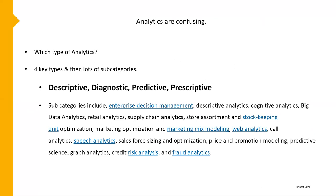Analytics can be confusing, but there are four key categories: descriptive, diagnostic, predictive, and prescriptive. Descriptive is what happened. Diagnostic is why did this happen. Predictive is where things are heading. And prescriptive is very much about what the next steps should be. There are some great reads out there on this, and if somebody wants to know more, just drop me an email.